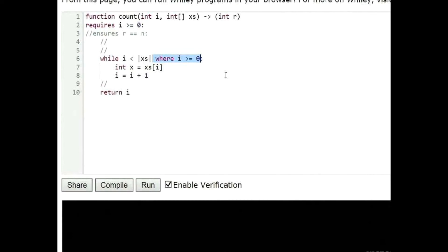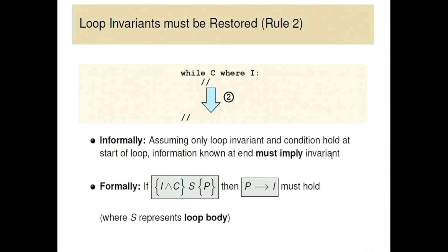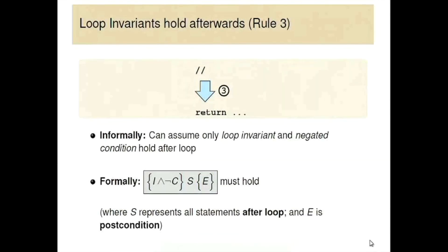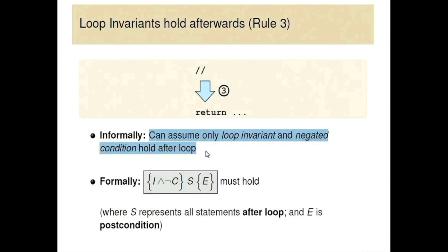After the loop, we can only assume that the loop invariant is holding and that the negated condition holds. We can't assume anything else. That's the key: assuming only the loop invariant and the condition — don't forget it.